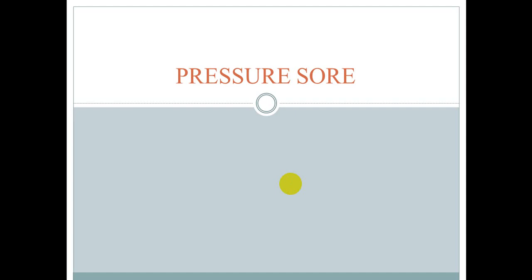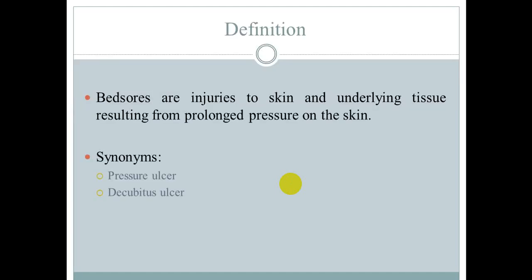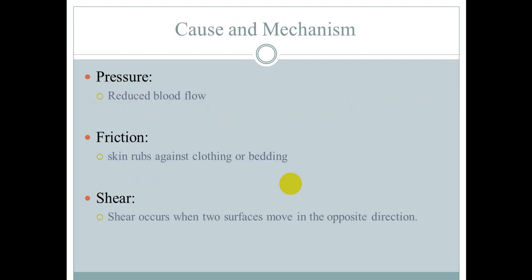First, I am going to talk about the definition of pressure sore. A pressure sore is a condition of the skin and underlying tissue caused by prolonged pressure, leading to damage or injury. It is also known as a pressure ulcer or decubitus ulcer.